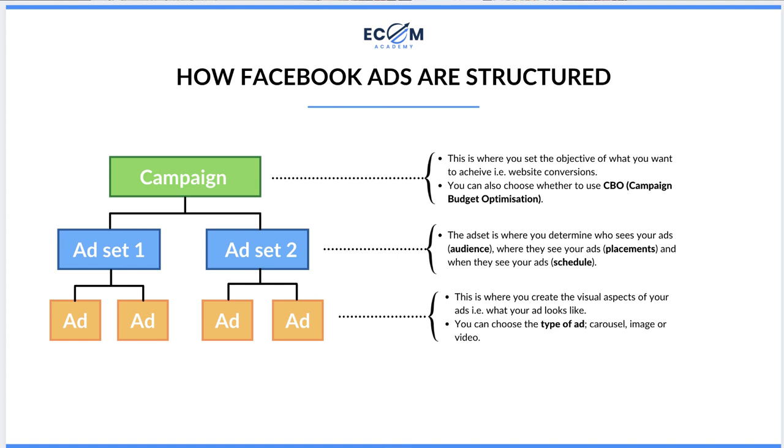How are Facebook ads actually structured? At the very top, think of it like a pyramid. You have the campaign — everything is essentially overseen by the campaign. This is where you set the objective of what you want to achieve, e.g. website conversions for e-commerce businesses. At the campaign level you also choose whether to use a CBO budget (campaign budget optimization) or ABO budgets (ad set budget optimization), where you set the budget at the ad set level.